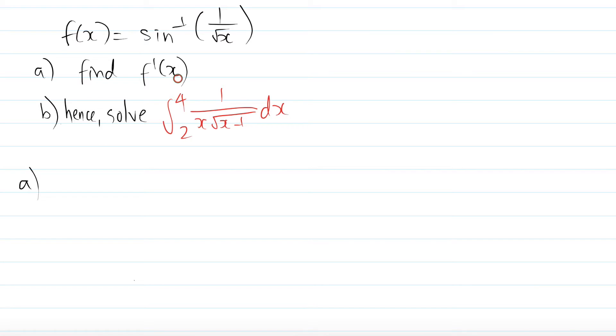Part A, find f'(x), which is the derivative of our function over here. So the problem though in our function is sin⁻¹(1/√x), you cannot derive that because it's not in this form. So there's no way to derive this by itself. You have to bring it into this form first.